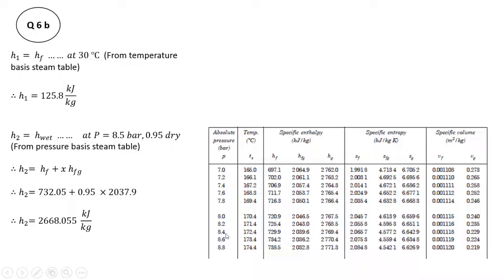From the pressure-basis steam table, values are available at 8.4 and 8.6 bar, so we take the average for 8.5 bar. At 8.4 bar, HF is 729.9, and at 8.6 bar it is 734.2, giving an average HF of 732.05 kJ per kg. Similarly for HFG: 2039.6 plus 2036.2 divided by 2 gives 2037.9 kJ per kg. With dryness fraction x = 0.95, H2 = HF + x·HFG = 2668.055 kJ per kg. This gives us the specific enthalpy of water entering the boiler and the specific enthalpy of steam generated.